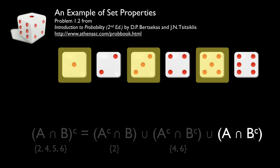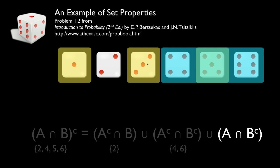Finally, we'll look at the set A intersected with the complement of B. A contains the odd outcomes one, three, five. The complement of B is four, five, six. The intersection of those two — anything covered by both — is only the outcome five.